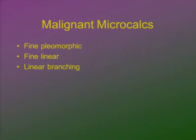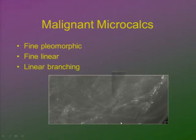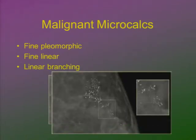Malignant microcalcifications are mostly identified by their morphology: fine pleomorphic (very small with varying shapes), fine in a linear distribution, or branching following the tracks of the ducts — these are probably malignant. You can see fine, small calcifications that are slightly clustered and follow the tract of the duct. Branching calcifications follow the anatomy of the duct.